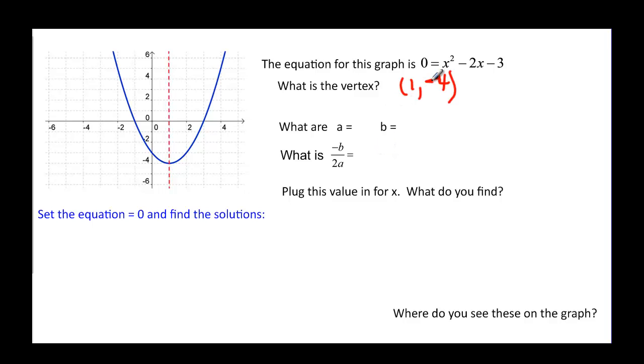What are a and b? And that's referring back to the equation. So a is 1, and b is negative 2. So if I do negative b over 2a, negative b would be the opposite of negative 2. So 2 over 2 times 1, which is just 2. And 2 over 2 is equal to 1.